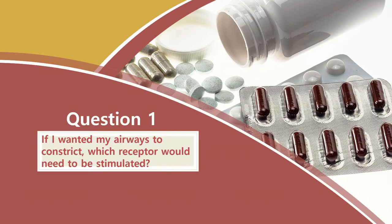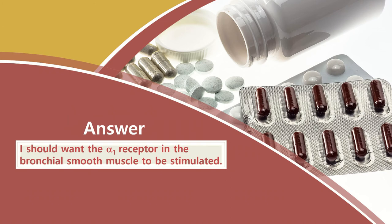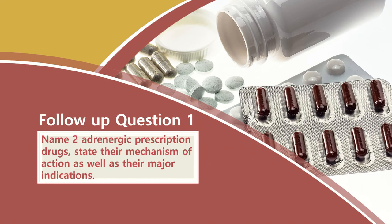That leads us to our first question: if I wanted my airways to constrict, which receptor would need to be stimulated or targeted? If you answered the alpha-1 receptor in the bronchial smooth muscle, you would have had the correct answer. The follow-up question asks you to name two adrenergic prescription drugs, state their mechanism of action, as well as their major indication.